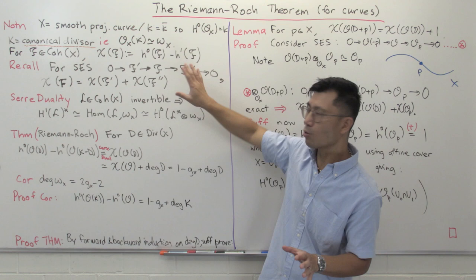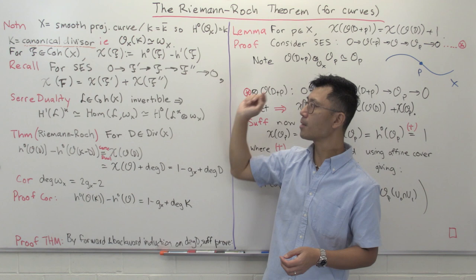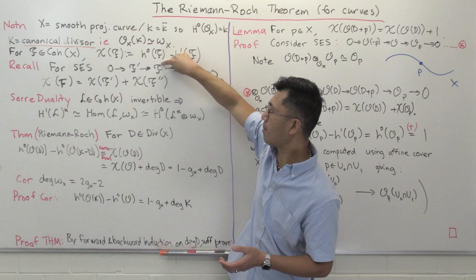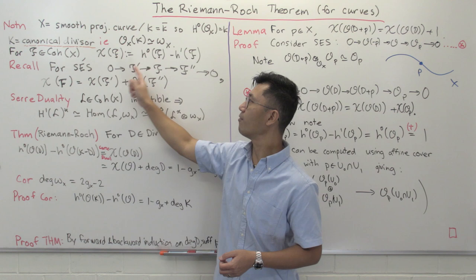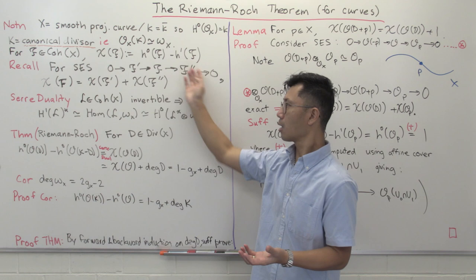Let me remind you of this very important property of the Euler characteristic. If you have a short exact sequence of coherent sheaves — say from 0 to F′ to F to F″ — then the Euler characteristics are related in a very simple way: additivity. The Euler characteristic of the middle term, chi(F), is just the sum of the Euler characteristics of the outside terms: chi(F′) plus chi(F″). That's the formula we're going to use to prove the Riemann-Roch theorem, and it's generally very useful in algebraic geometry.